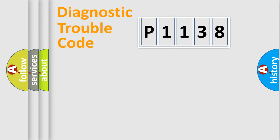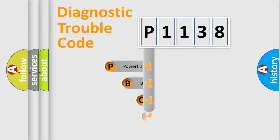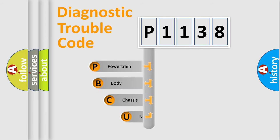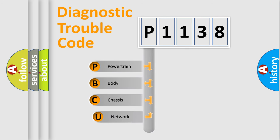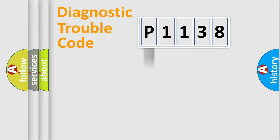Let's do this. First, let's look at the history of diagnostic fault code composition according to the OBD2 protocol, which is unified for all automakers since 2000. We divide the electric system of the automobile into four basic units: Powertrain, Body, Chassis, and Network.